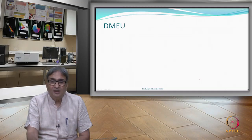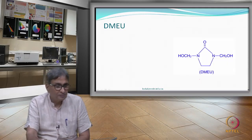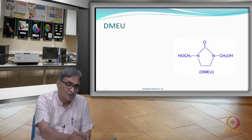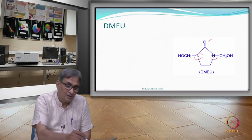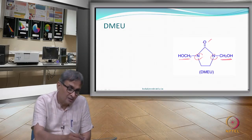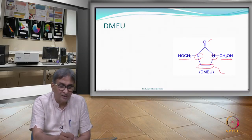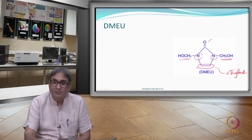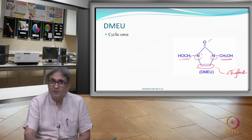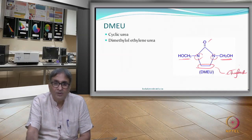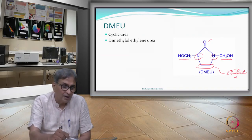The next compound that came into commercial existence is called DMEU. Now, this compound is like urea with a carbonyl group and N-methylol groups, but it is a cyclic compound. An additional ethylene group has been added, making it a cyclic compound. This compound is called dimethylol ethylene urea — DMEU. The ethylene group has been introduced to make a cyclic compound.